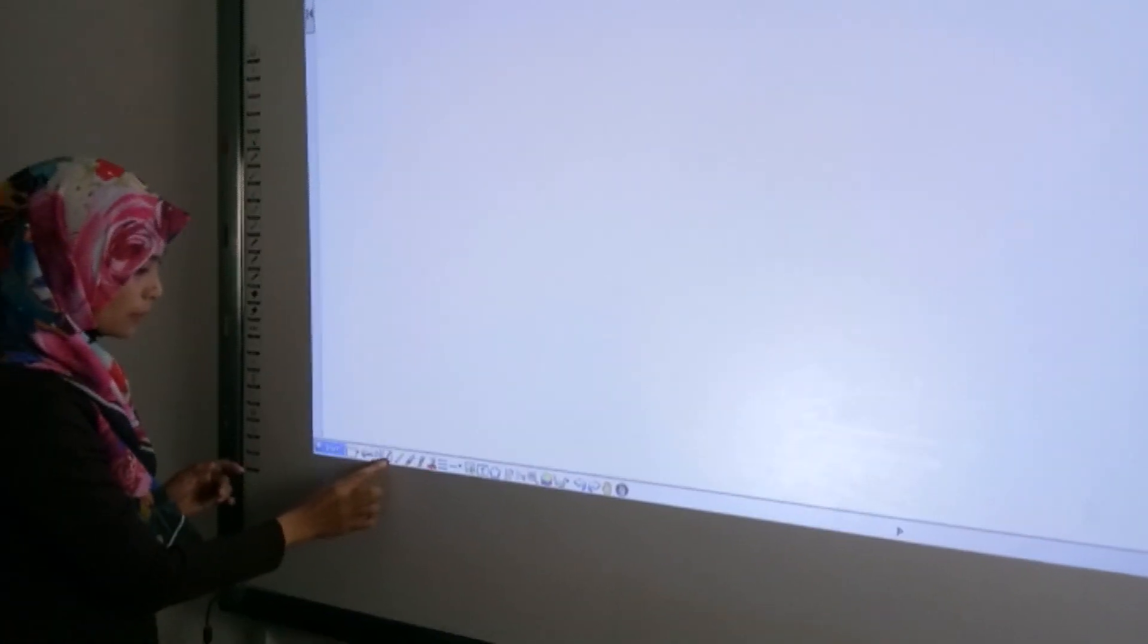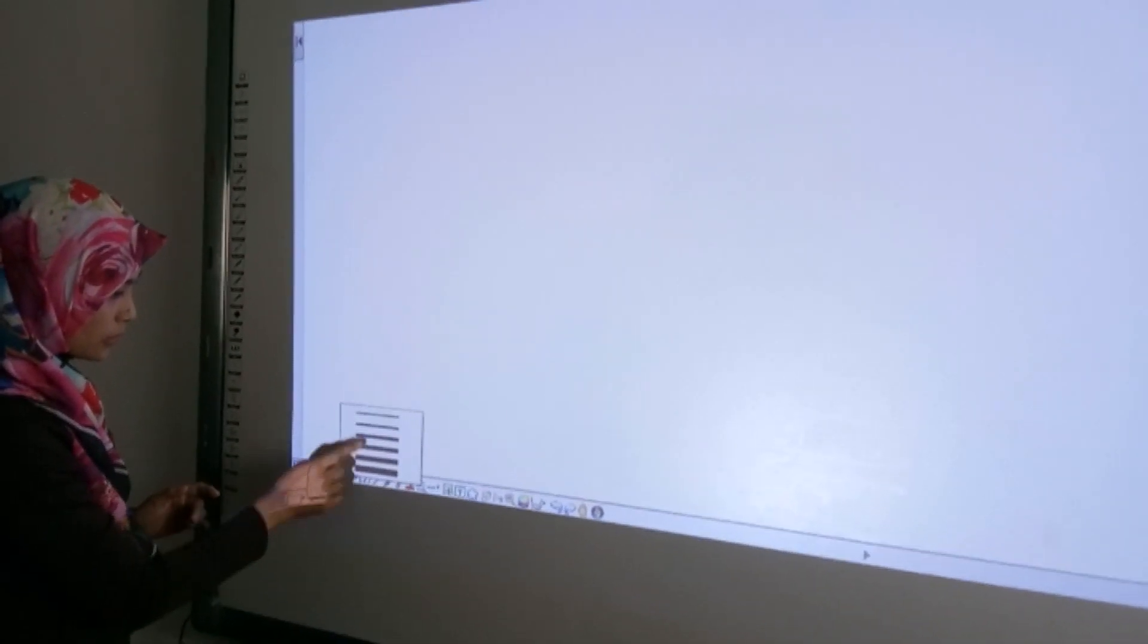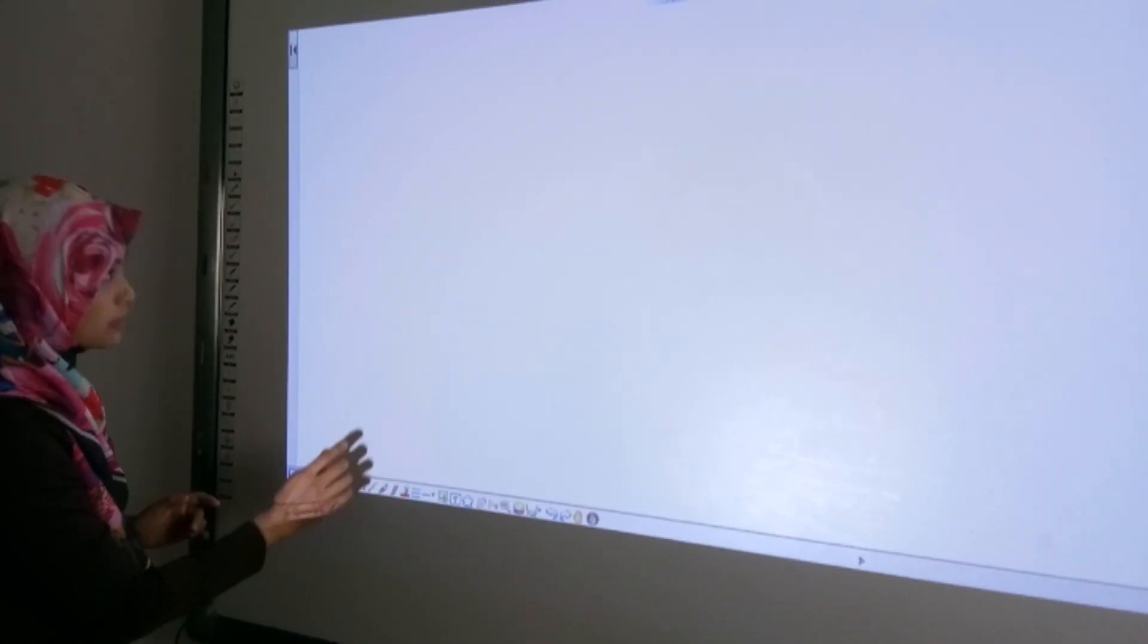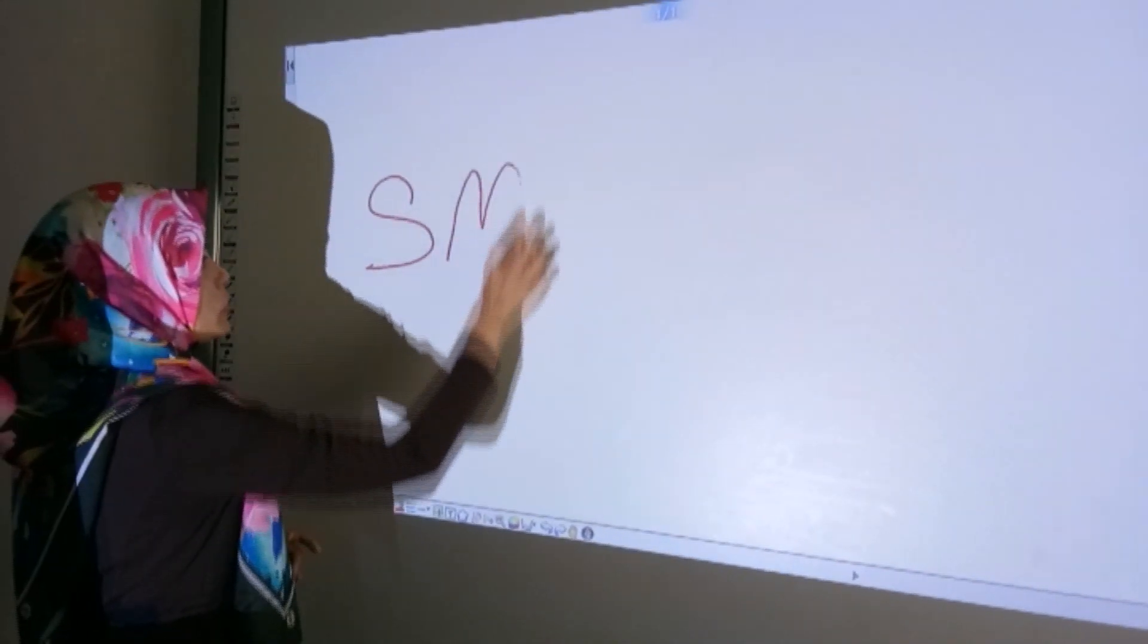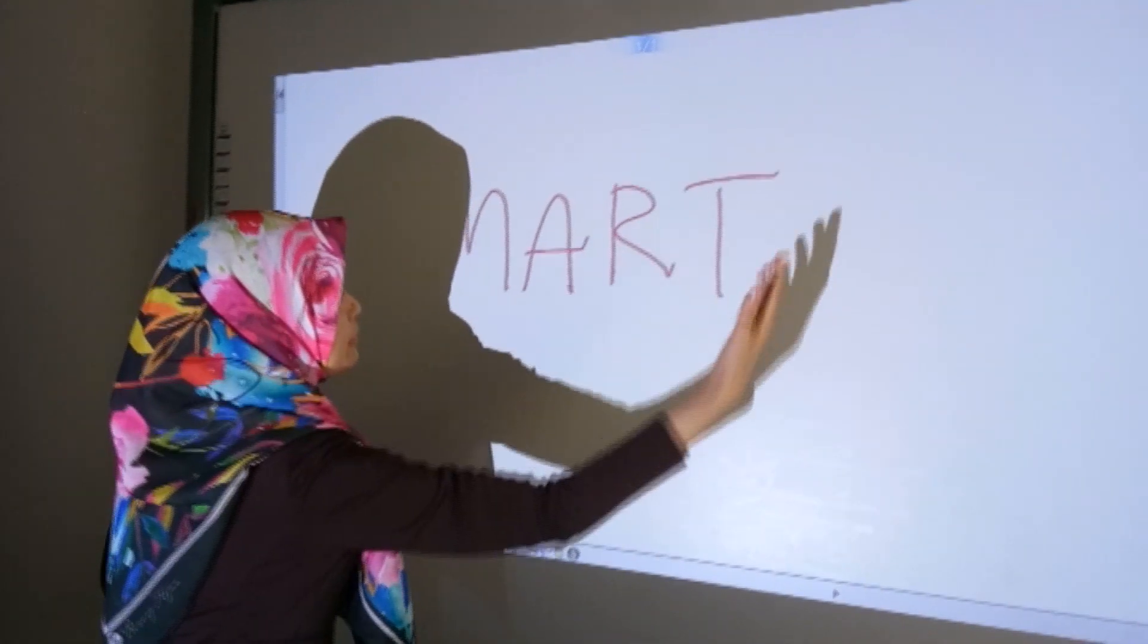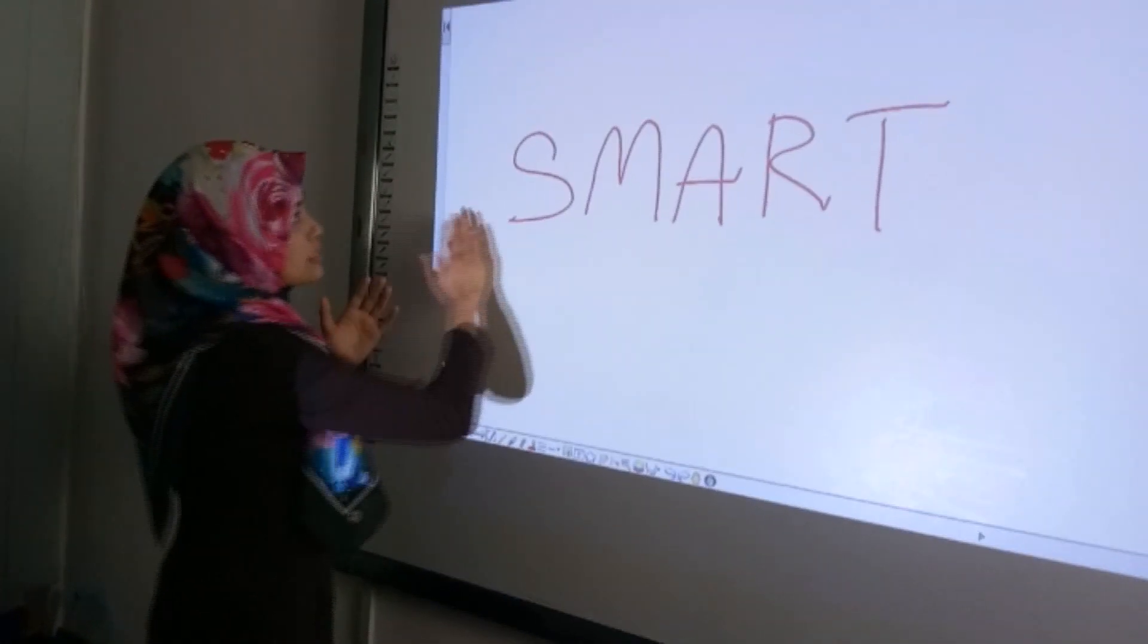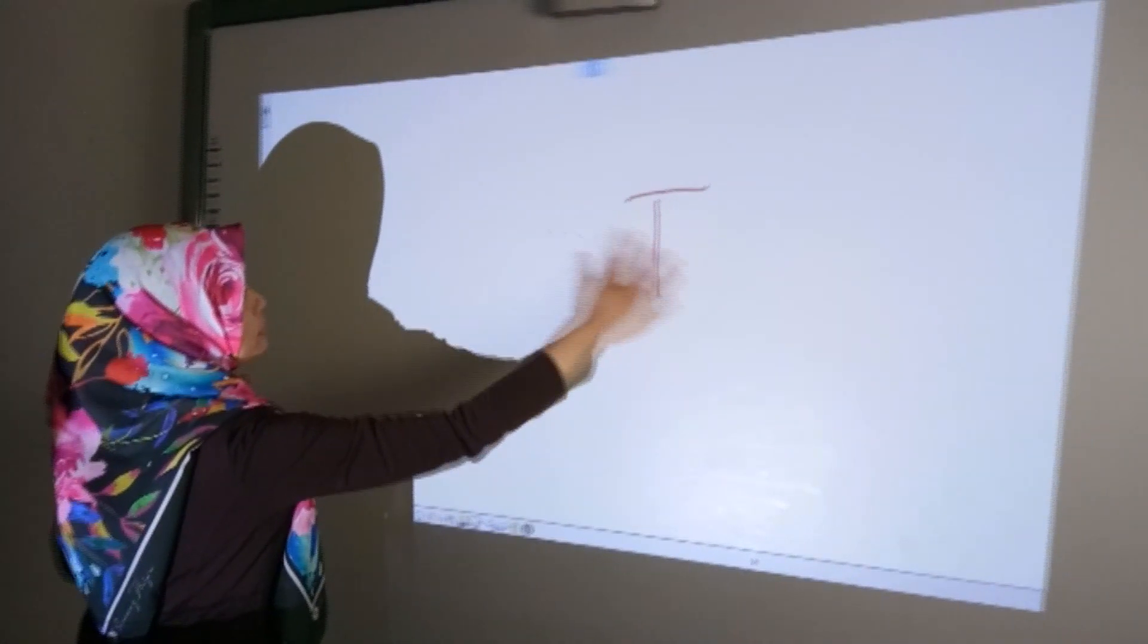Saya tunjuk bagaimana cara nak menulis. Kita gunakan pen dan dia punya line dia. Saya tulis contoh. Smart. Menggunakan touch finger saja. Menggunakan jari. Nak padang pun senang. Just buat guna tangan.